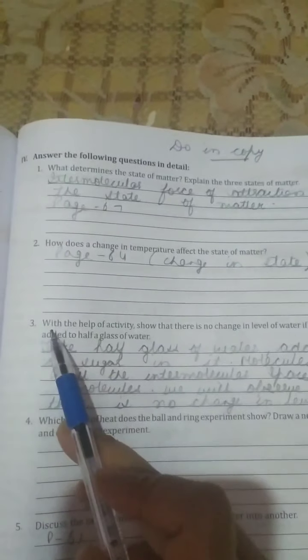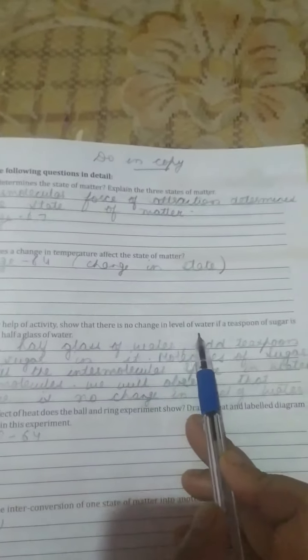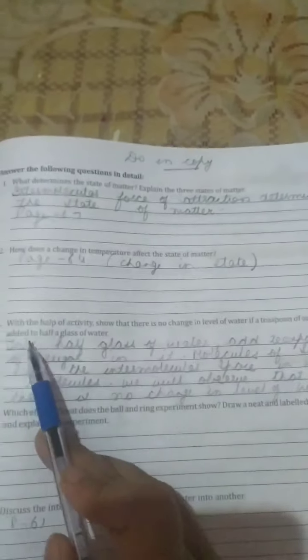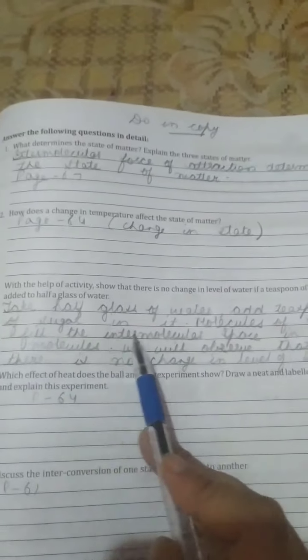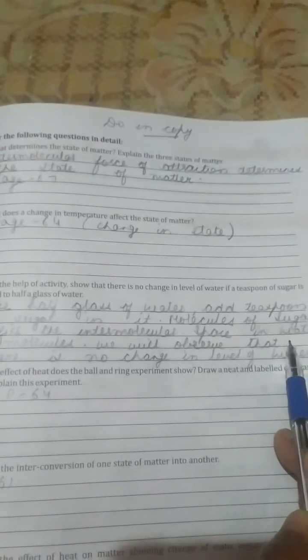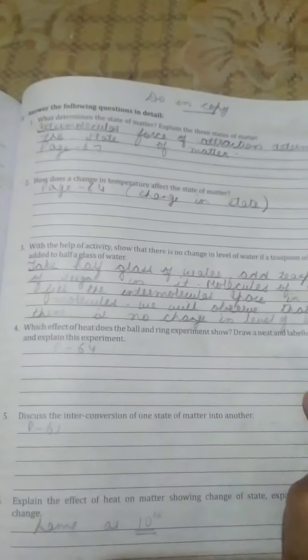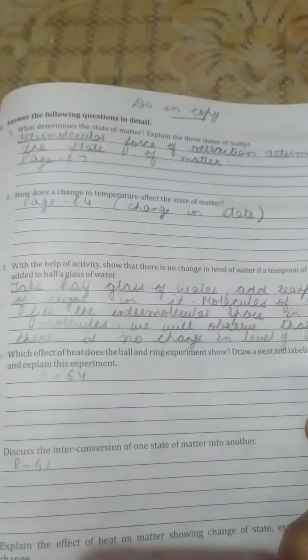Third question is: with the help of activity, show that there is no change in level of water if a teaspoon of sugar is added to half a glass of water. Take half glass of water, add teaspoon of sugar in it. Molecules of sugar fill the intermolecular space in water because water has molecules a little bit apart from each other.